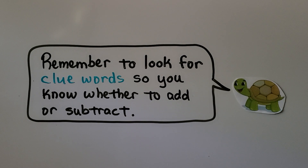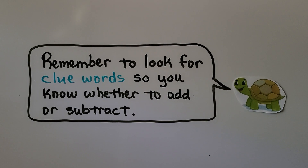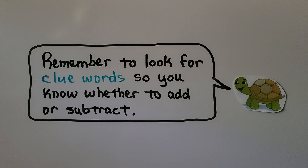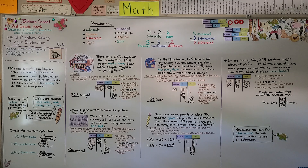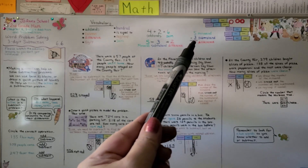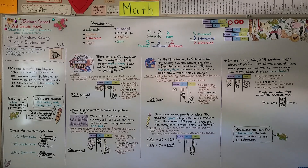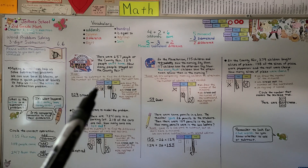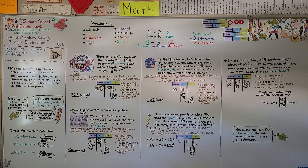Remember to look for clue words so you know whether to add or subtract. The clue words tell us the action — if something's being taken away or added, we'll know to use plus or minus. Remember the top number is the minuend, we're taking away the subtrahend, and the answer is the difference. When making drawings, you draw the minuend — the greater number. Our next lesson, 6.7, is three-digit subtraction with regrouping tens. I hope you're doing well and I'll see you there. Bye.